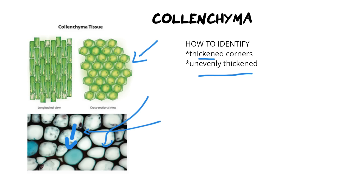The way they are arranged also differs. Vessels are arranged end to end, which means that wherever one vessel ends another one is stacked on top of it. Tracheids, because of their pointy ends, need to be overlapped — they sort of sit on top of each other in an overlapping arrangement. That's how you can tell the difference between the two.